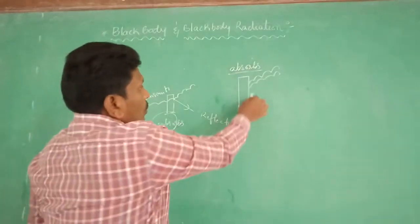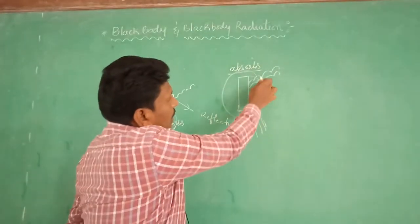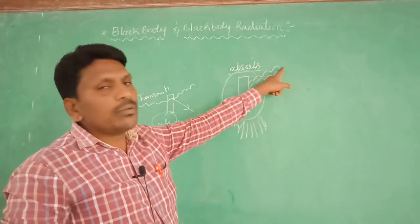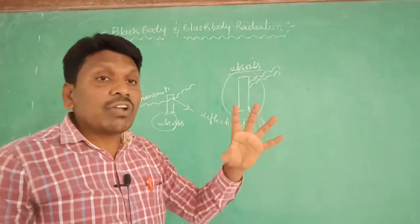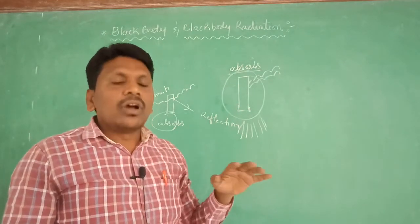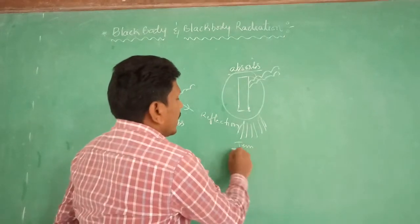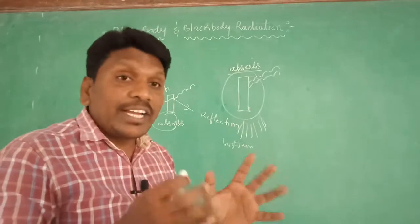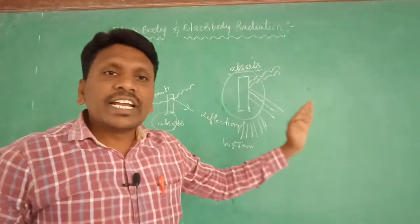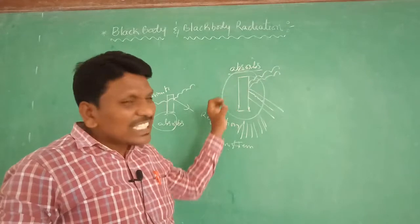The heat energy which is absorbed is the entire energy — all kinds of frequencies, all kinds of wavelengths of light are absorbed by the body. Yellow color light, blue color light, all kinds of colors, all kinds of wavelengths of light are absorbed. So as the temperature increases, at high temperatures, the total energy will be radiated out, and this body emits the entire radiation which was received or absorbed.